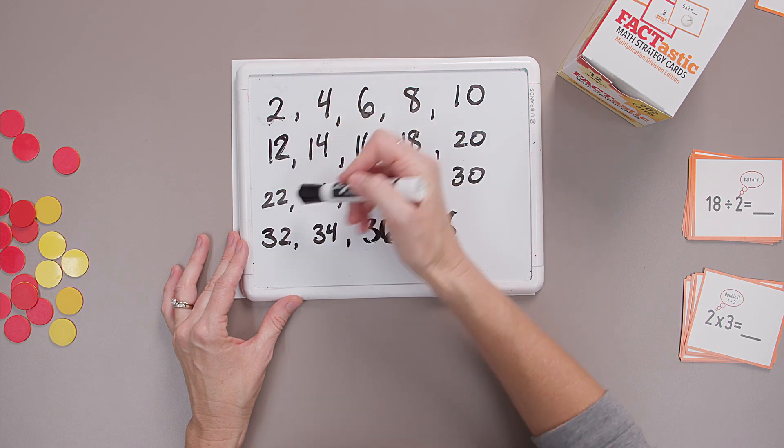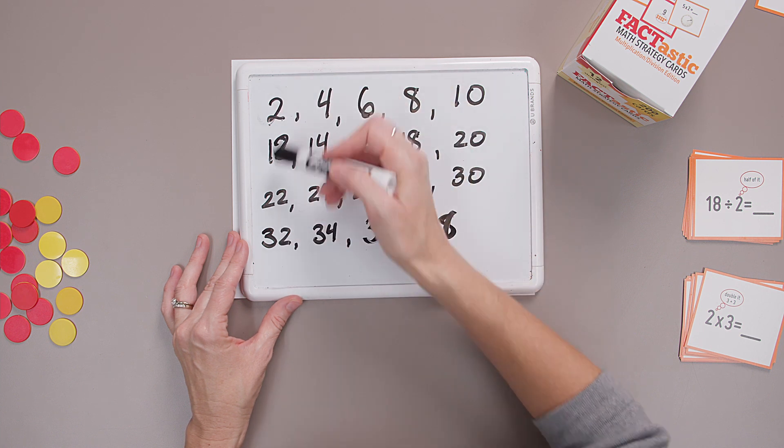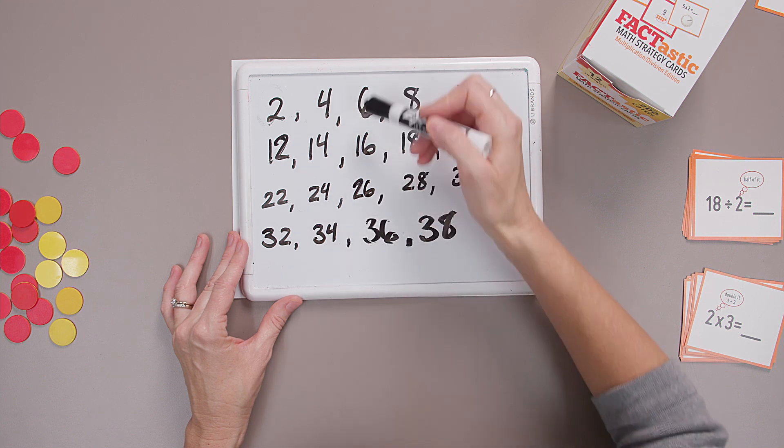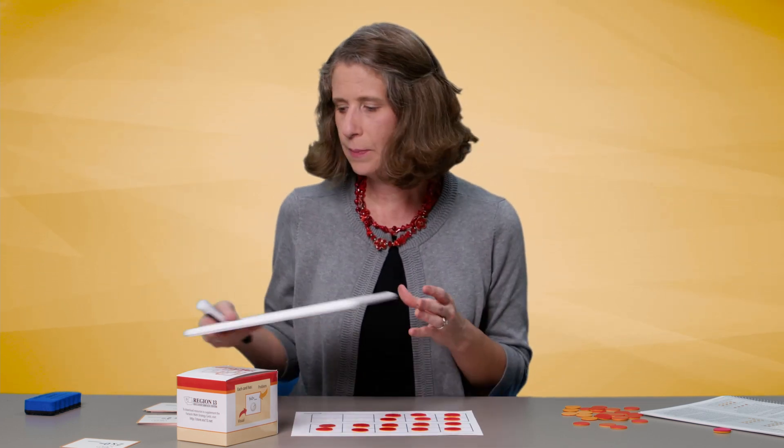Again, I'm seeing patterns. I see there's a pattern of twos, fours, six, eight, or tens in the ones place when I am skip counting by twos or finding those doubles. Let's keep that in mind.